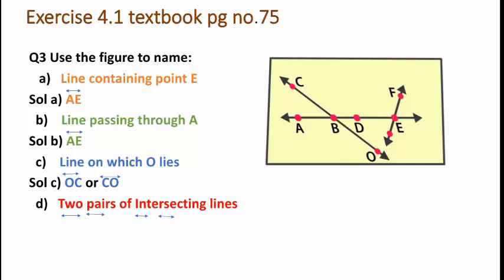Next, you have to find two pairs of intersecting lines. First, what are intersecting lines? Intersecting lines are two lines that share exactly one point.